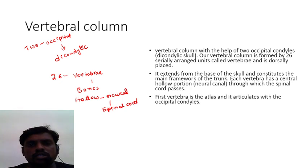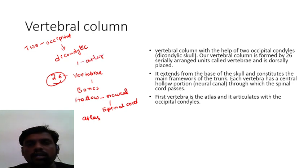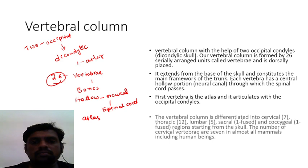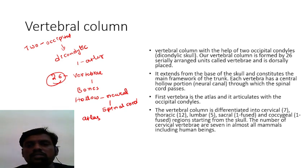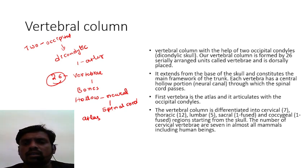The first vertebra is called the atlas. There are 26 serial vertebrae present in total. The atlas articulates with the occipital condyles of the skull. The vertebral column is differentiated into various regions based upon their location.